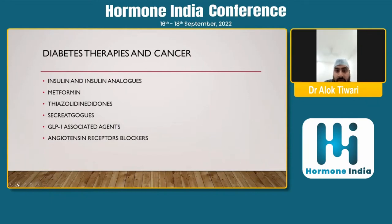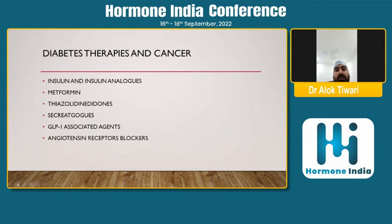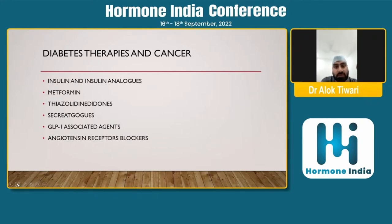Looking at common anti-diabetic therapies, thiazolidinediones and metformin have certain roles that decrease the risk of malignancy. There is some questionability about insulin and insulin analogs as to whether they increase cancer risk. Though the debate is not yet settled, evidence suggests metformin is more favorable for reducing cancer risk, while insulin may increase cancer risk by causing a greater hyperinsulinemic state.